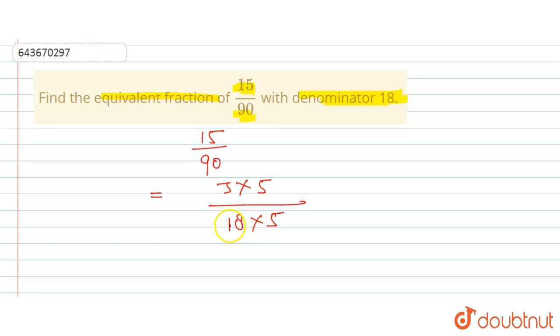That means 18 fives are 90 and 3 fives are also 15. So 3 upon 18 can be written as is, and like this, and 5 upon 5